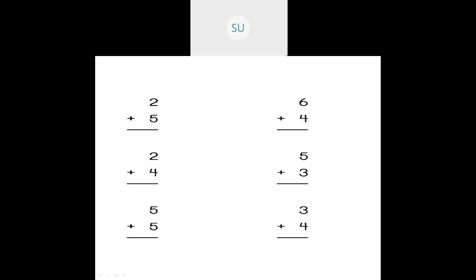Let's see a few more tally mark problems. Two plus five: draw two tally marks, then five more — total seven. Six plus four: draw six tally marks — one, two, three, four, five, six — then four more — seven, eight, nine, ten. So six plus four is equal to ten.